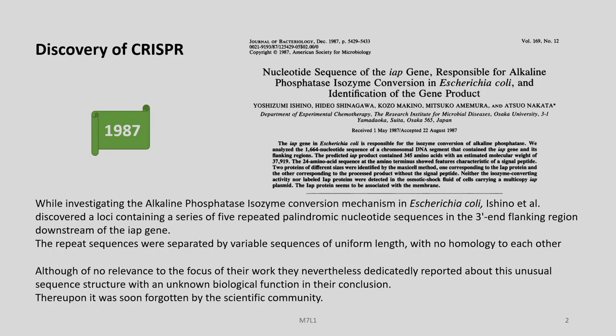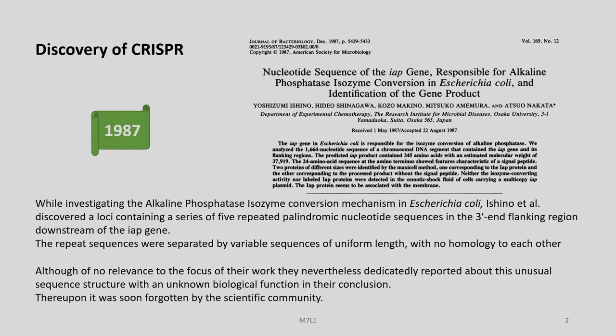Let us start with the work of Ishino et al., who in 1987 were working on an interesting enzyme called alkaline phosphatase, which has many isozyme forms. They were looking into the mechanism of conversion of the various isozyme forms in E. coli, and while doing so, they discovered a series of five repeated palindromic nucleotide sequences in the three-prime flanking region downstream of the IAP gene. The repeat sequences were separated by variable sequences of uniform length with no homology to each other.